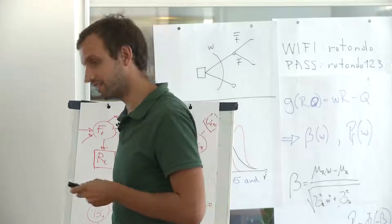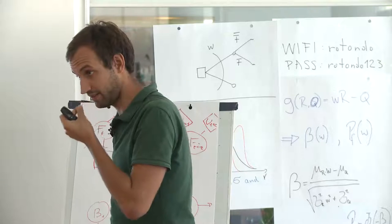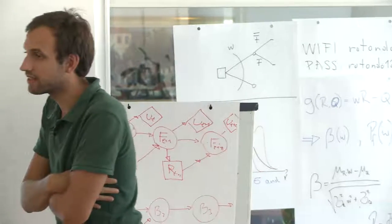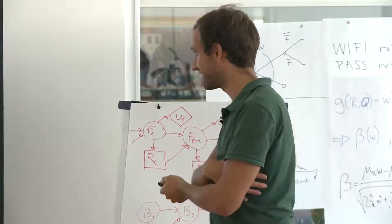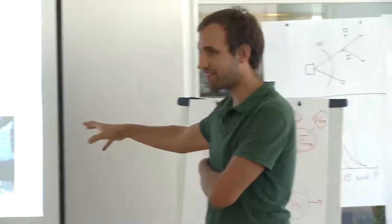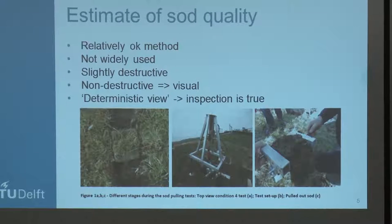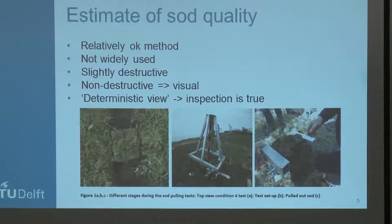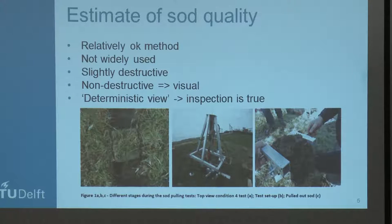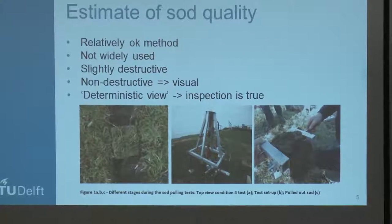Question: Do the erosion properties from the destructive test give you a quantitative continuous number, or is the result also described in a discrete sense? Answer: It gives something like a ground truth — or as close as we get — for the actual parameter. They pull the sod: if it falls apart in one pull it was fragmented, which is related to an erosion resistance value used in the model; pull a bit more and it's open; can't pull it apart and it's closed.